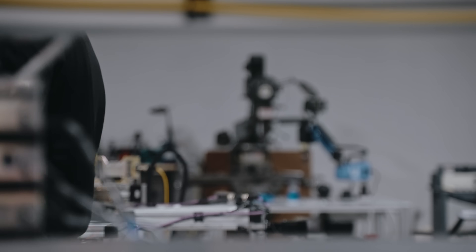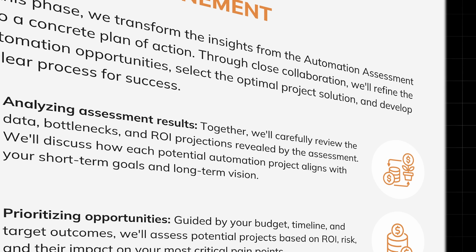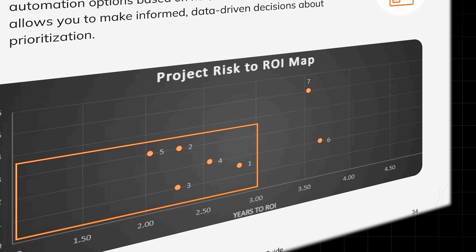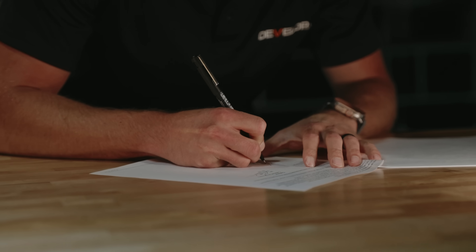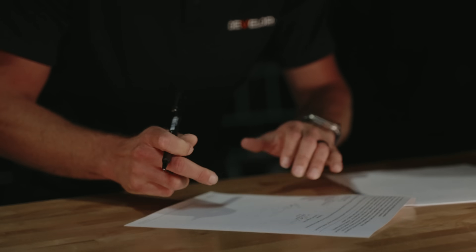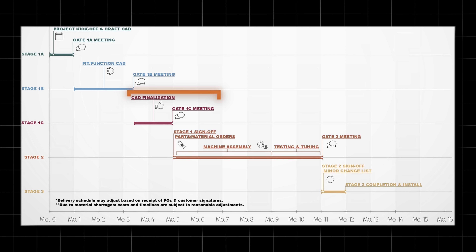A quick overview on how you got to your build: you selected DEVELOP and they performed an automation assessment. We presented you with multiple project options ranked on risk and return on investment. A project was then chosen and you signed a mutual scope of work that lays out the project details, definitions of success, and the mutual responsibilities between you and DEVELOP. At DEVELOP, we follow a stage-gate approach with stages from CAD to integration.